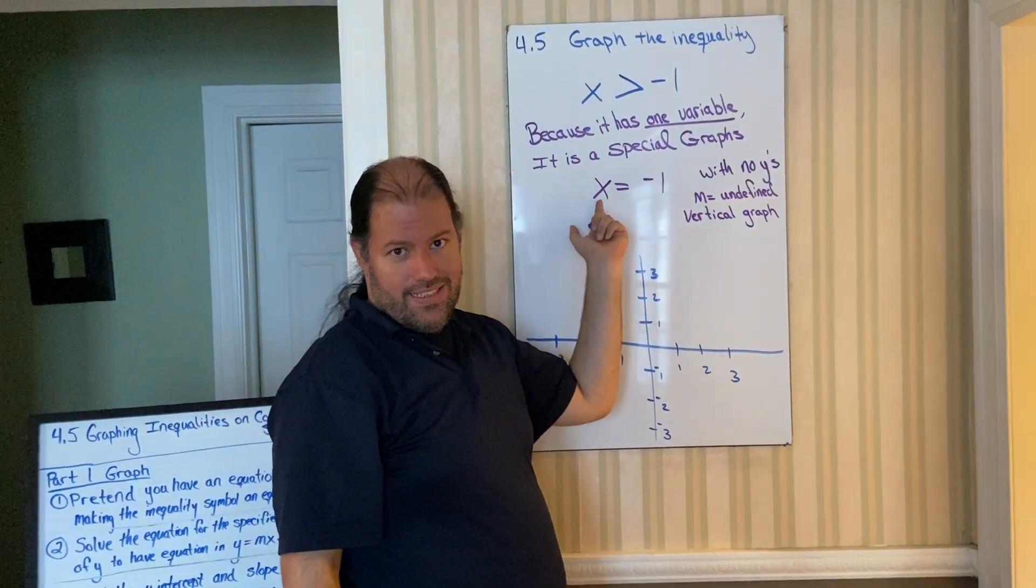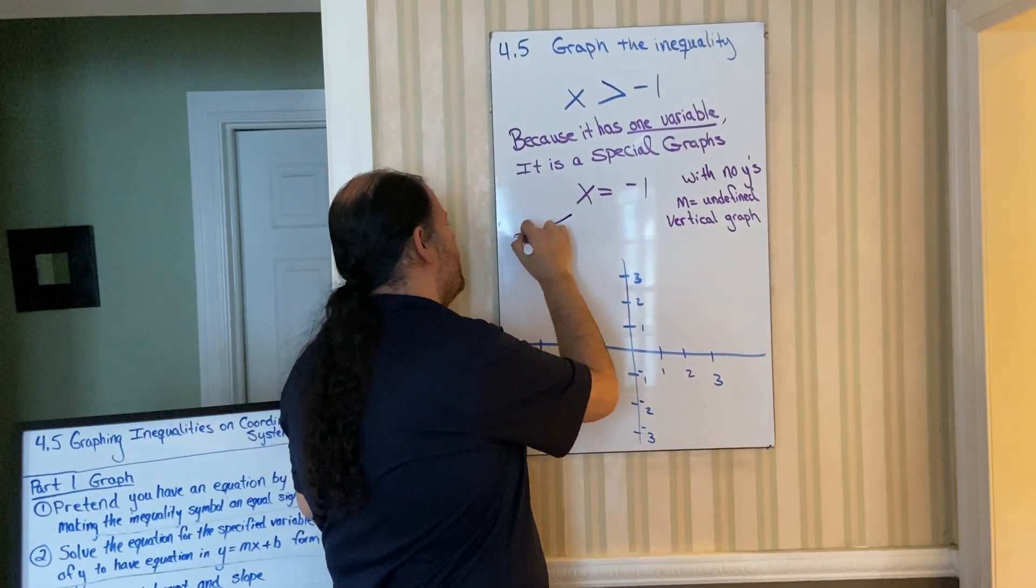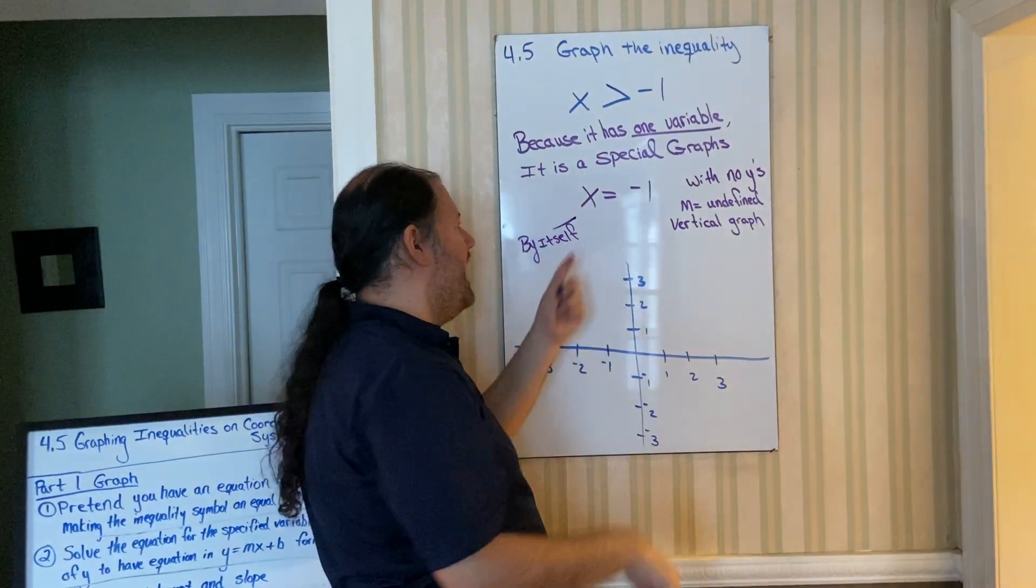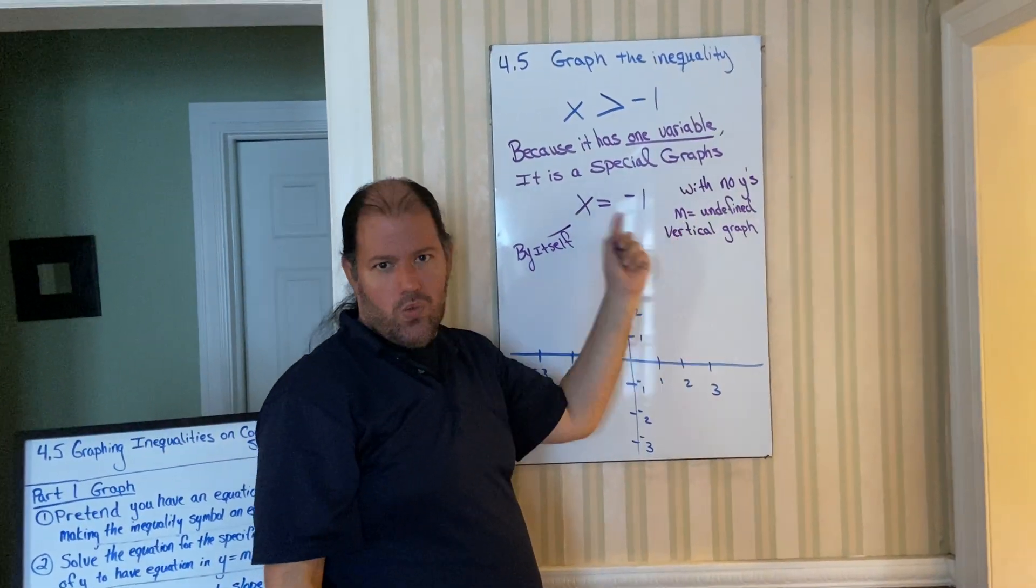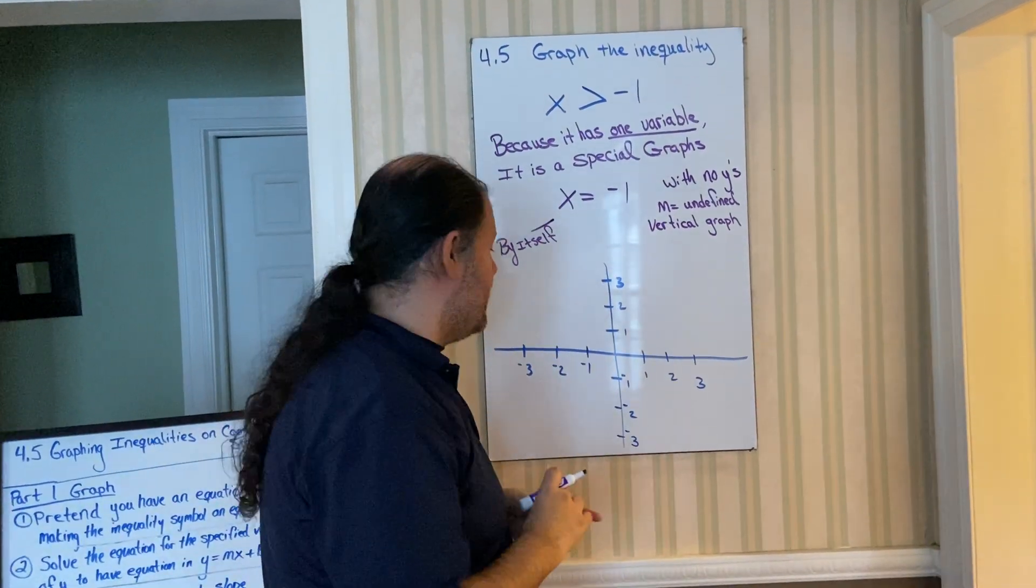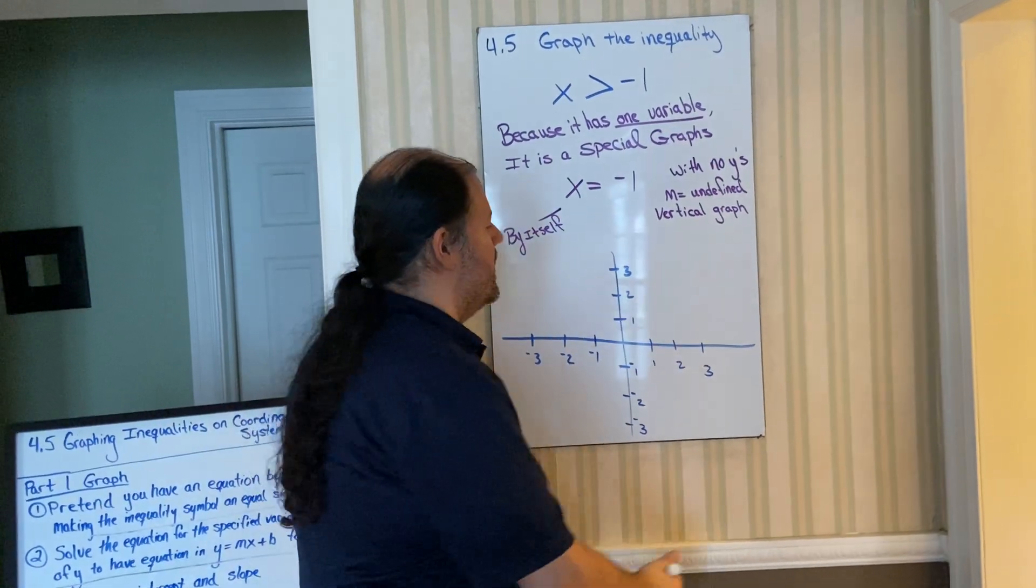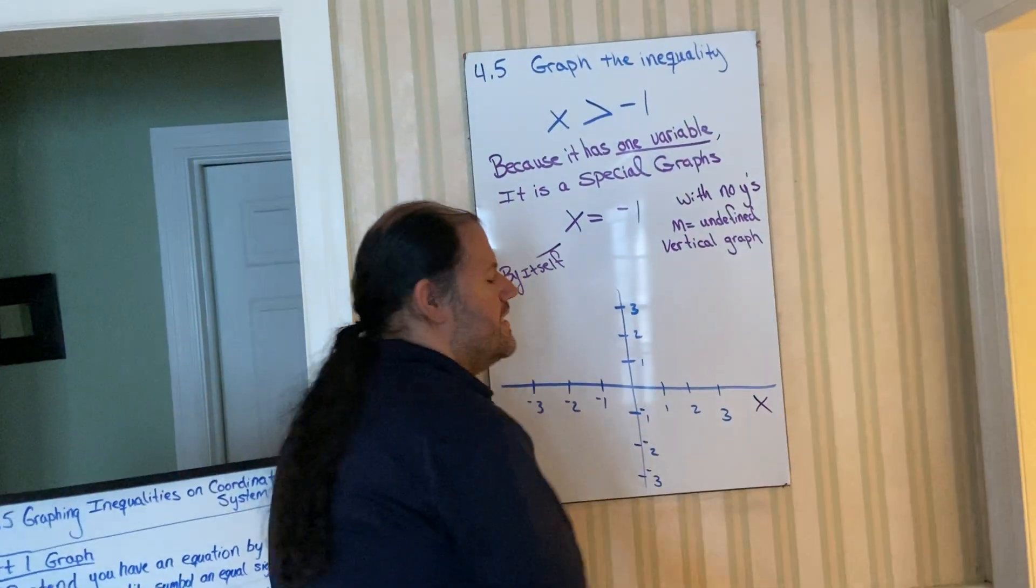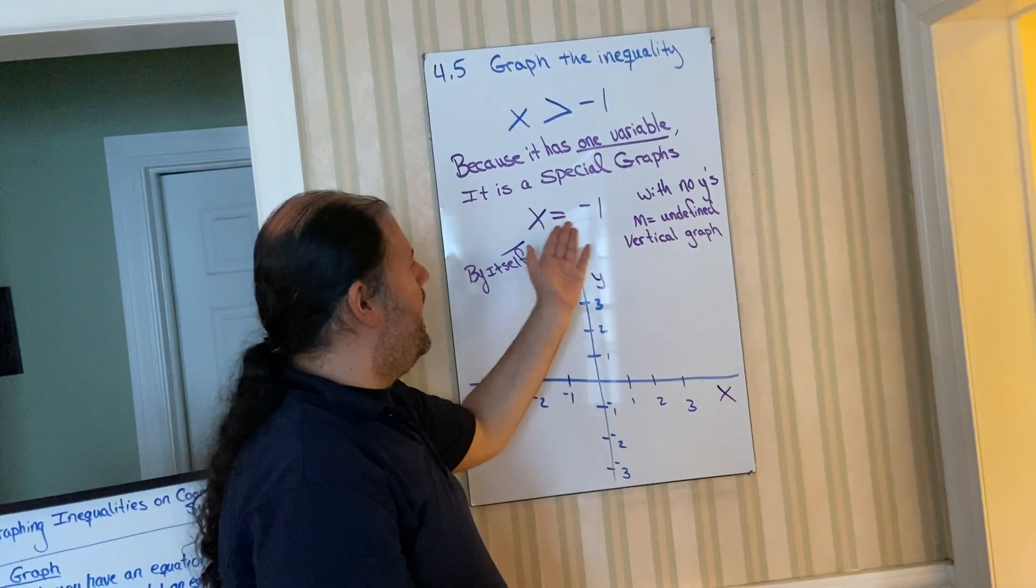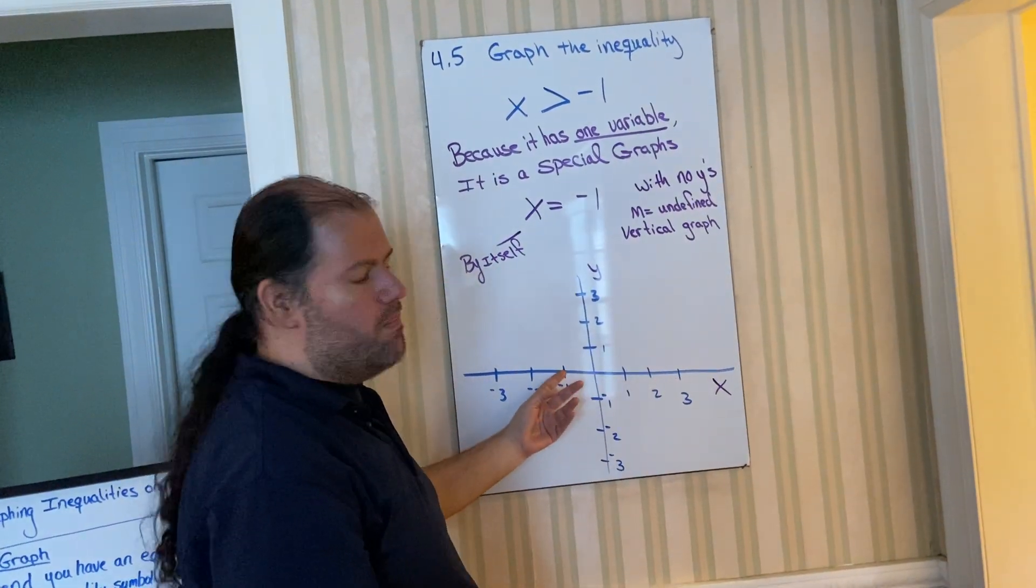So find x, since this is solved. x is by itself. If x was not by itself, you would move or divorce to get x by itself. But once x is by itself, find x equals negative one. Remember, this is our x axis. This is our y axis. Find x as negative one. Boom. Right here.